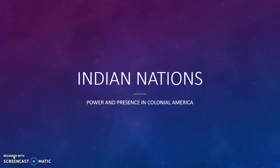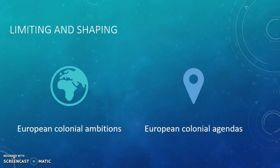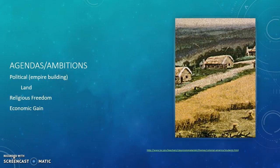The topic of this PowerPoint is Indian nations and their power and presence in early colonial America. When thinking about this time period, we want to think about how Indian nations altered the agendas as well as the ambitions of European powers at this time period. So in looking at that, we want to think about what are the things that Indian nations did and what did they attempt to do in order to maintain their own power? We want to lay out what those agendas and ambitions were for European powers at this time.